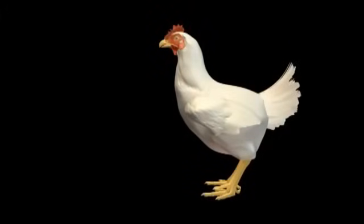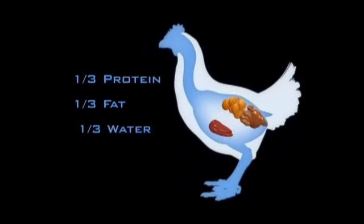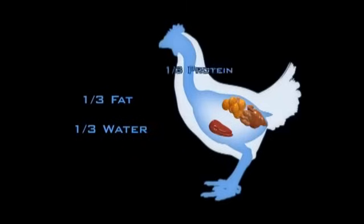When a hen is actively laying, nutrients from the food she eats are converted into the building blocks of egg yolk. These building blocks, one-third protein, one-third fat, and one-third water, are then carried by the bloodstream from the liver to the ovary.